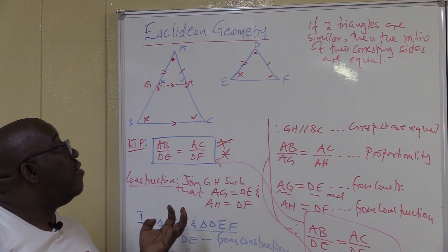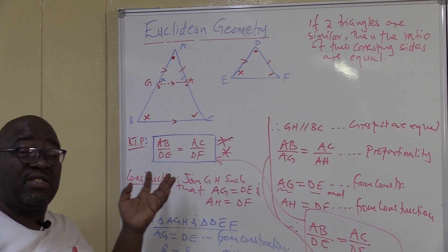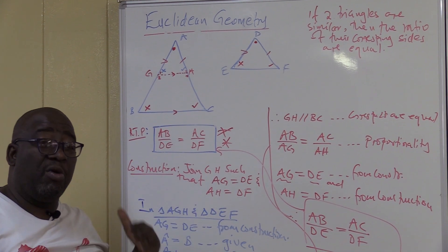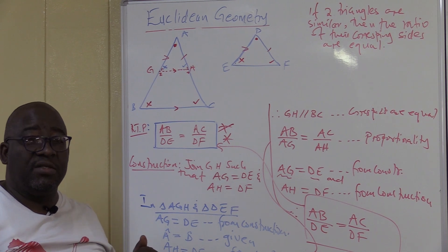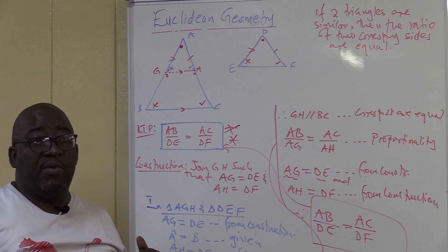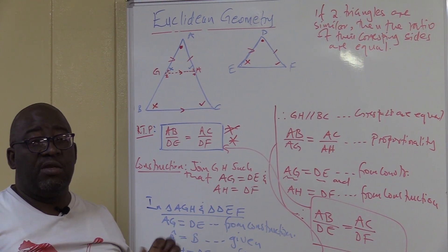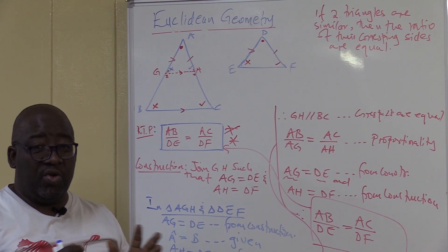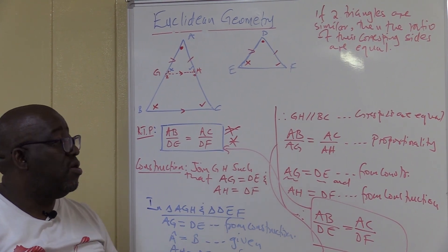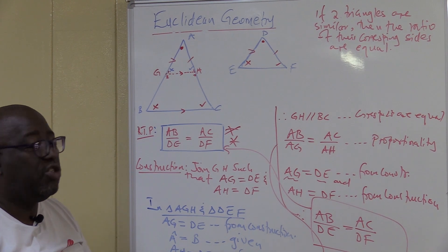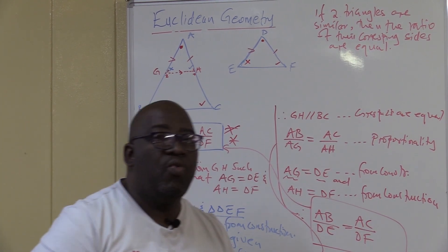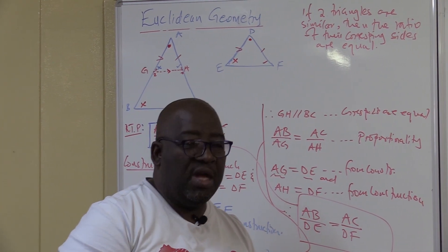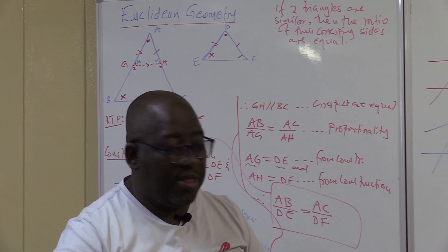Remember, the proof of the Similarity Theorem and the Proportionality Theorem are required in the exams. There are about six theorems that you need to prove altogether in your Euclidean geometry. I want us to look at how we set this in the examinations. Thank you.